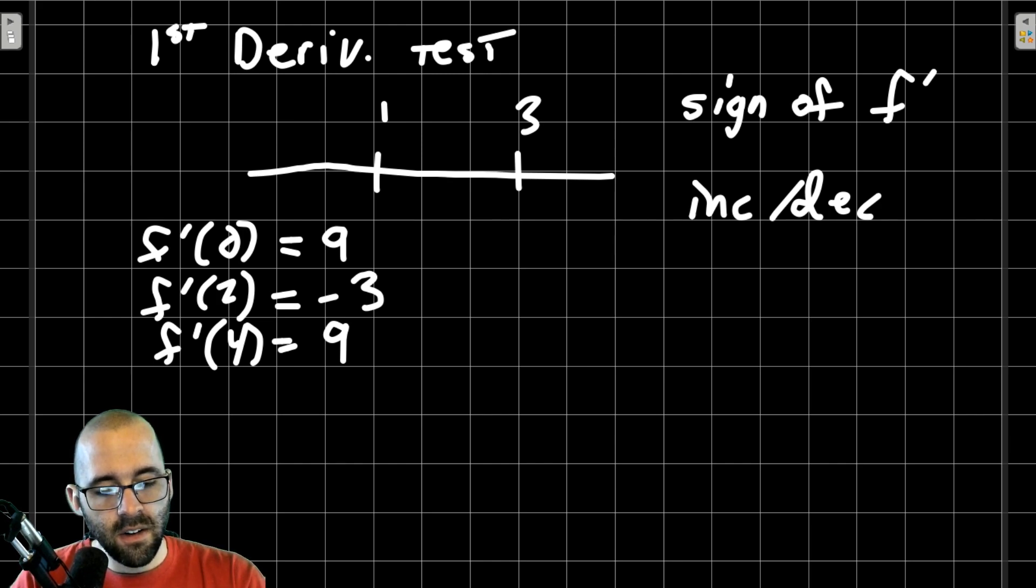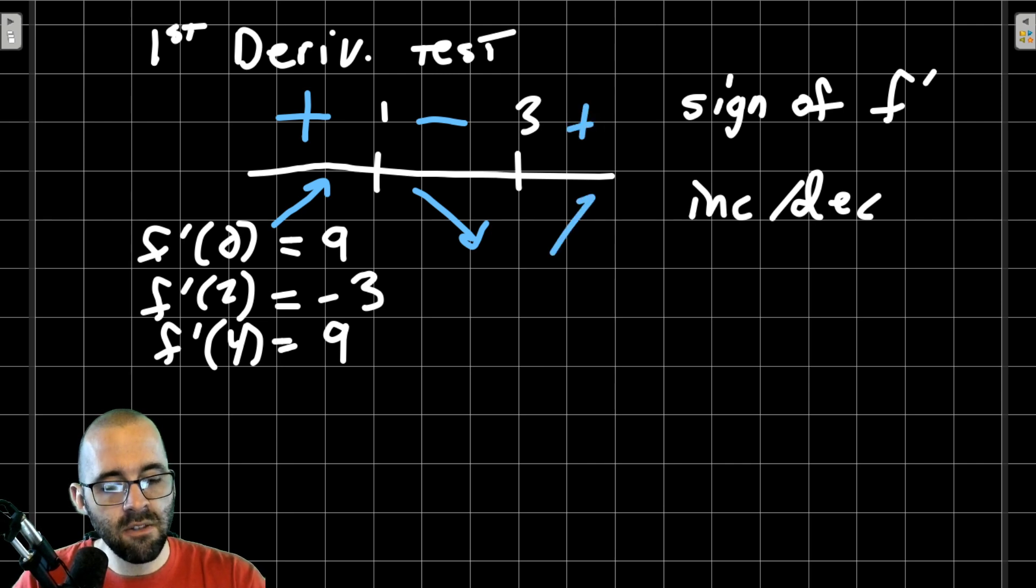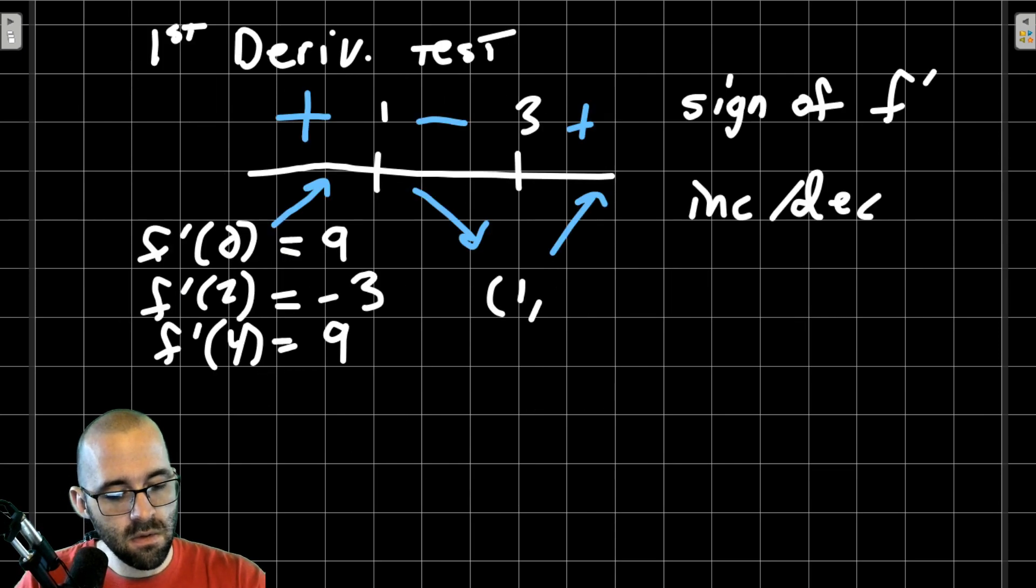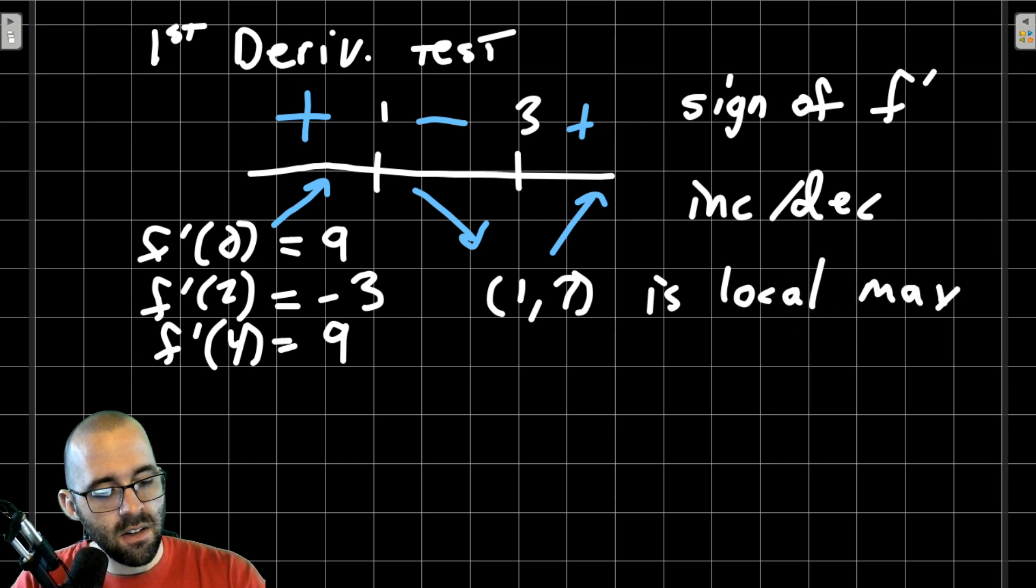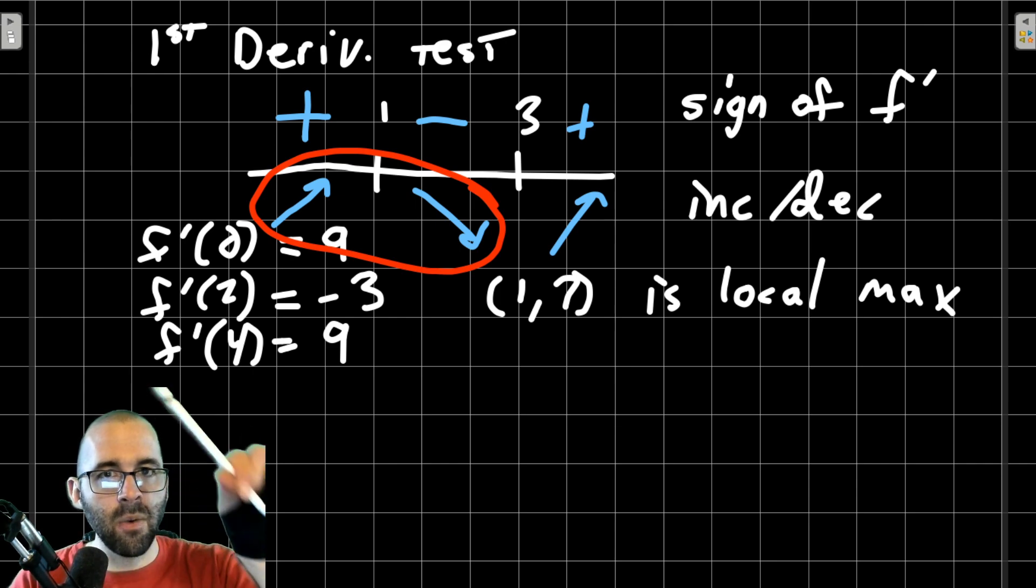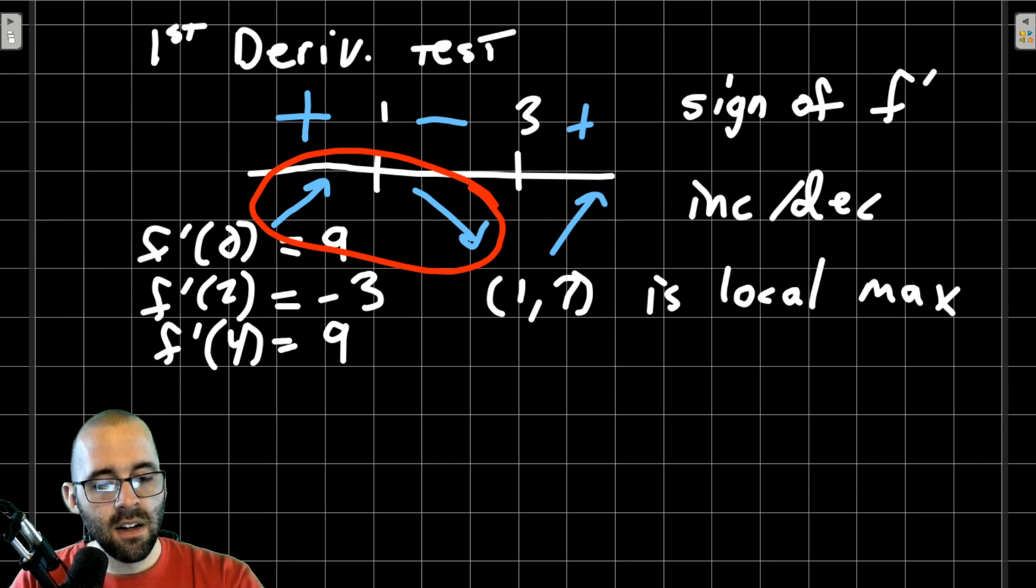To the left of 1, we have a positive derivative. The function is increasing. In the middle, when x is 2, we have a negative derivative. The function is decreasing. To the right, at 4, we have a positive derivative. The function is increasing once more. So by the first derivative test, (1,7) is a local maximum. Even if you forget the first derivative test, if you look at the shape, increasing to decreasing, we're going up then down. We must have had a hill, a peak, local max.